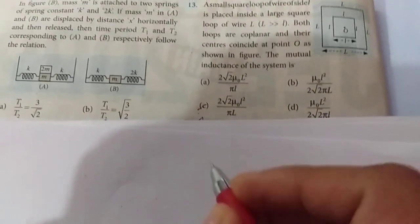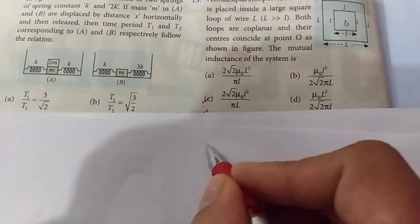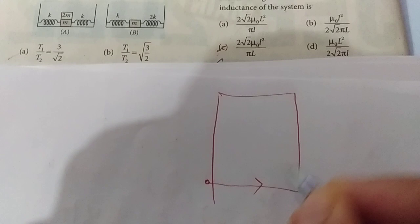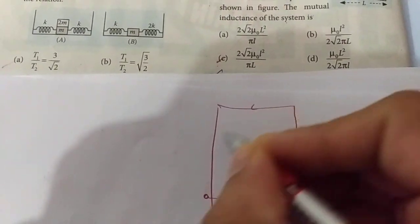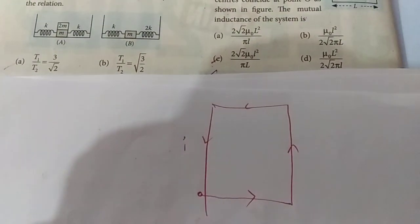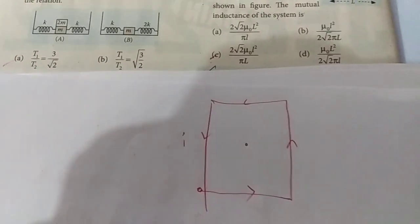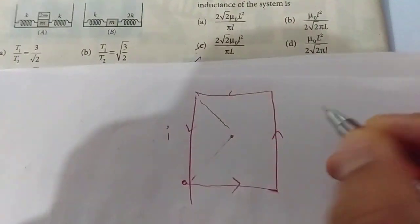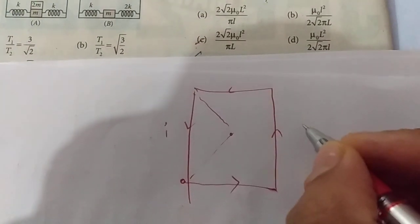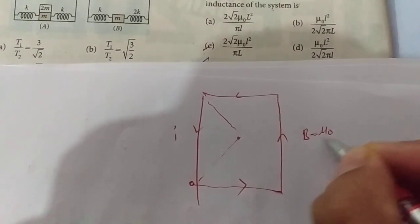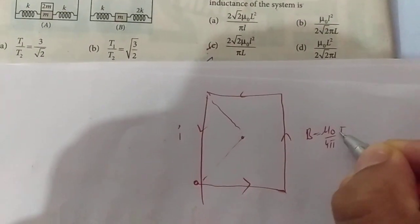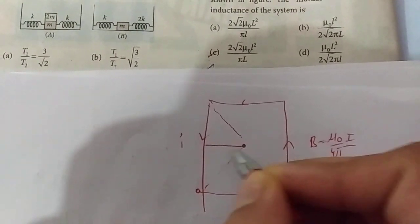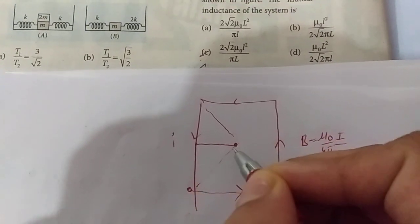So students, first of all, we will take flux here. Let's suppose I take this big coil. When current flows in this coil, it will become a magnetic field here, so we will calculate that magnetic field. For one element, the magnetic field is B = μ₀/4π × I/A, where A means distance from the center where you need to find the field.